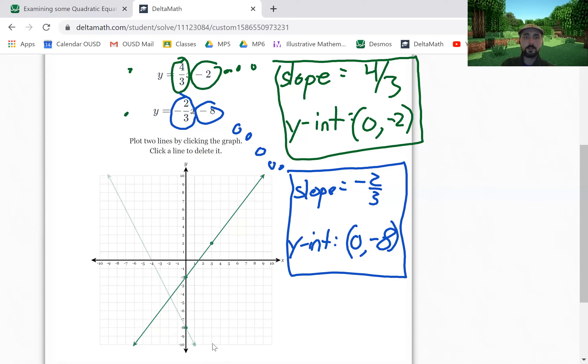Okay. So let me annotate a few things. First, just to reiterate, the slope was 4 thirds.